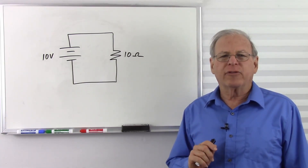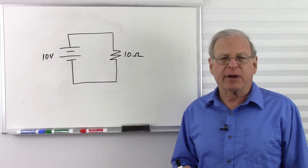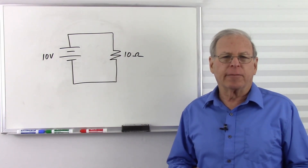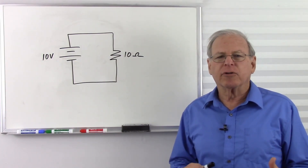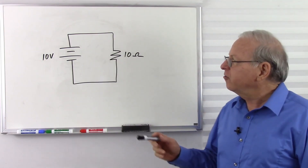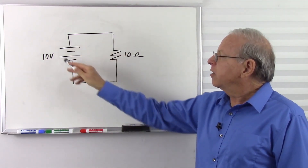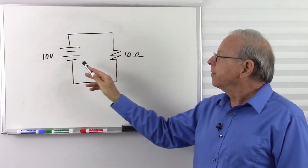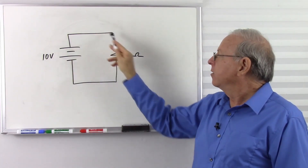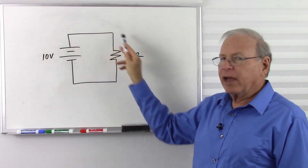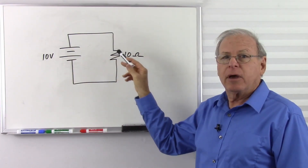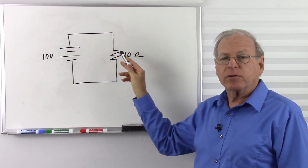Today we're going to take a look at some questions that came up on my video about measuring voltage. The questions are from a viewer who goes by the name of Purple Crimson. The questions are essentially: when looking at these questions on the board, I have a wire that goes from the battery to the resistor. That wire has resistance and I have current flowing through it — why don't I have a voltage drop?